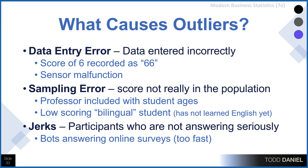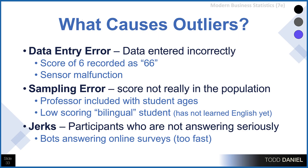Or we're studying bilingual students, and we have one person with a very low score. As we examine what is happening, we find this is someone who got placed into this class but hasn't really learned English yet, and so is performing at a very low level. That's not really who we are intending to study, so we could remove that score from our distribution.